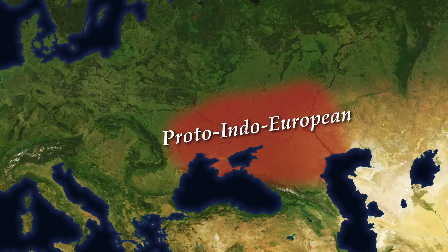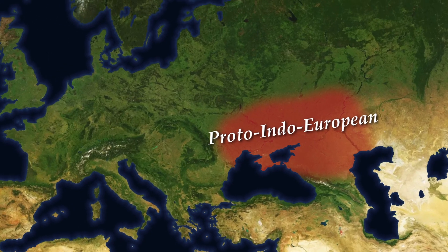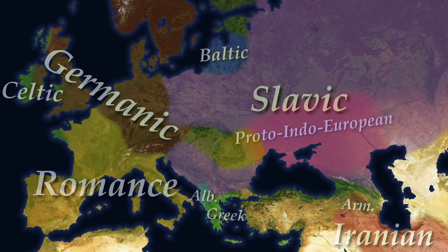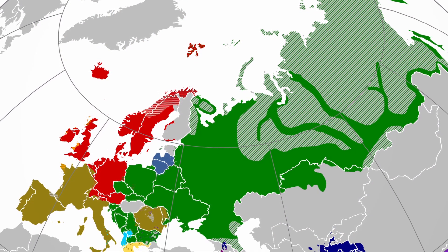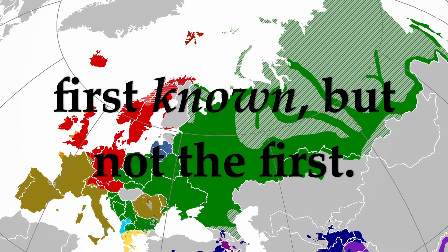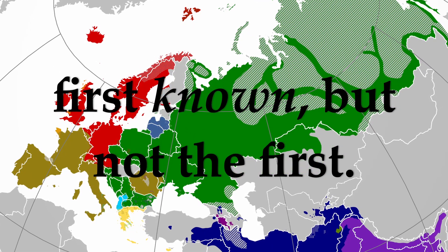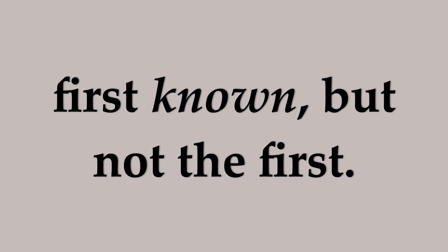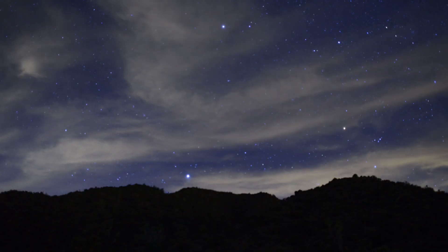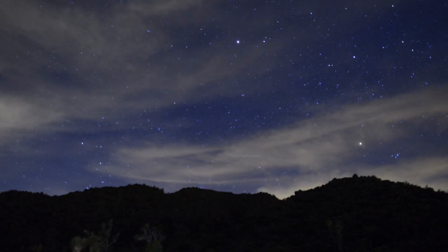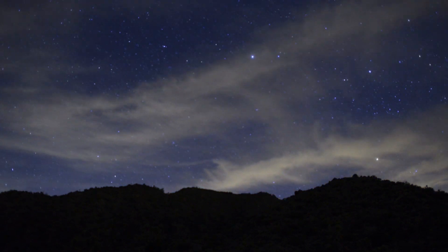Of course, this inheritance is not exclusive to English. As the name suggests, many of the languages of Europe and India branched off from this first known seedling. It's also important to stress that this is the first known Indo-European language, because Proto-Indo-European is not truly the oldest ancestor of English. It most certainly had its own ancestor, which in turn had its own ancestor, going back and back and back into the furthest recesses of time, which are sadly beyond our reach.